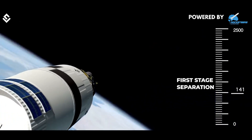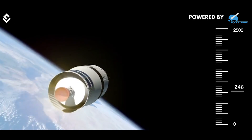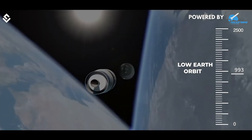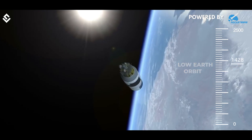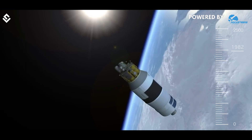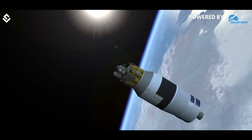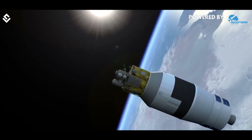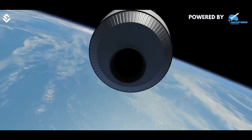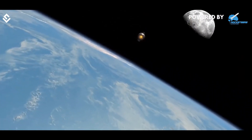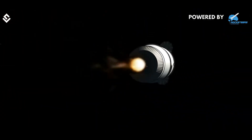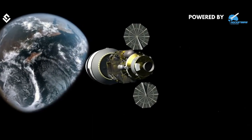The second stage engines ignite and continue to burn for another ten minutes, by which point the vehicle must have reached low Earth orbit. After some time, the second stage shuts down but restarts after a few seconds. Before second stage separation, the rocket body is spun using spin motors. After that, the second stage is detached and the third stage is fired. The third stage continues to burn its solid fuel, and when the fuel is completely burnt, the third stage separation starts.